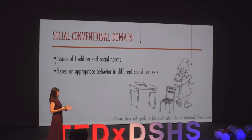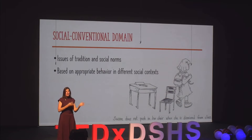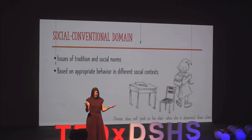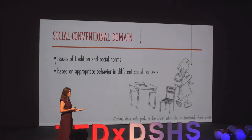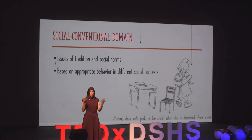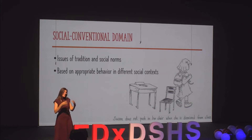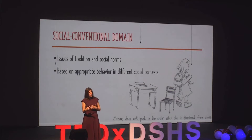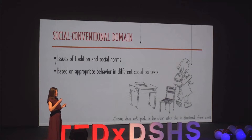The social conventional domain differs from the moral domain in that it's focused on social norms and not disrupting the social order — what is appropriate behavior in different social contexts. For example, right now everyone is sitting in seats and no one's having a side conversation. But at a graduation rehearsal, students might be sitting on the back of chairs or screaming across the auditorium. Similarly, a baseball cap in the school hallway might earn detention, but it's completely acceptable out on the baseball field.